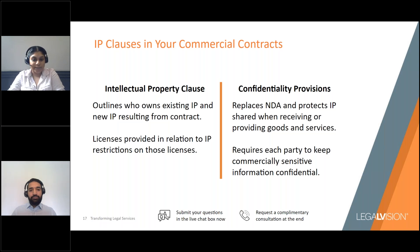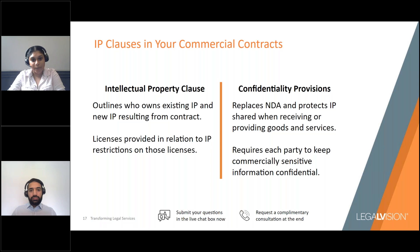Your commercial contract should also contain confidentiality provisions, which require each party to keep confidential any commercially sensitive information they receive during the course of the arrangement. This will take the place of an NDA and will help to provide extra protection for your IP. This is particularly useful where you've created new business processes as a result of providing a service to a client — such as a new manufacturing process — and you want to make sure your client can't share details of your new process with third parties.